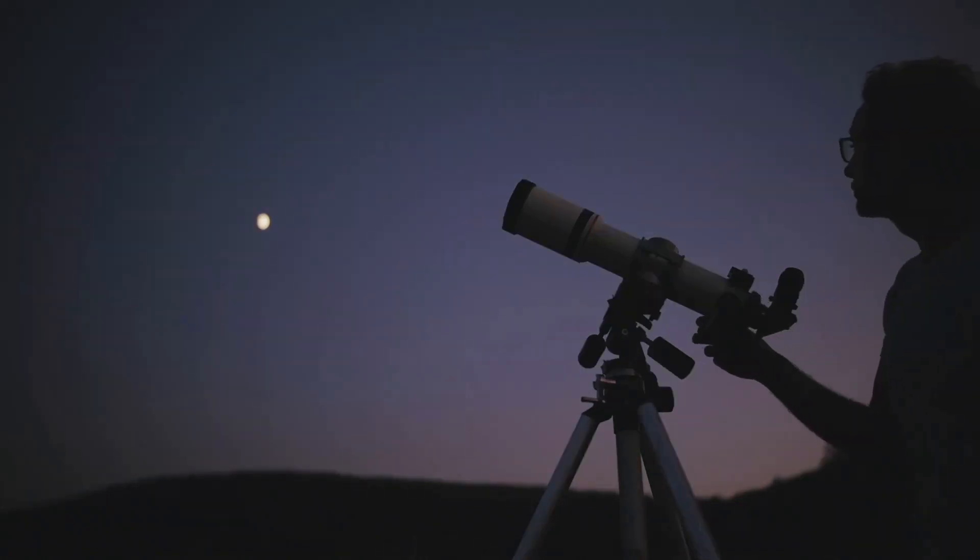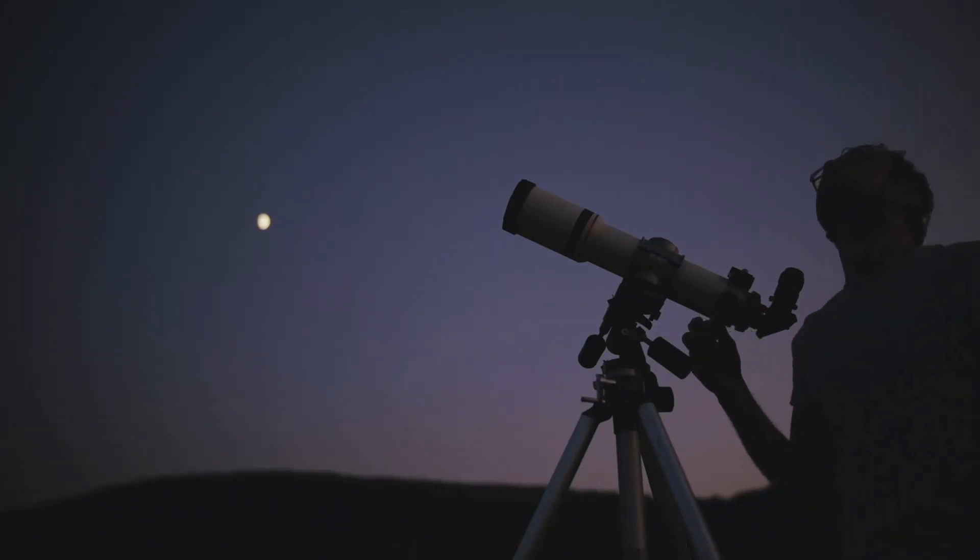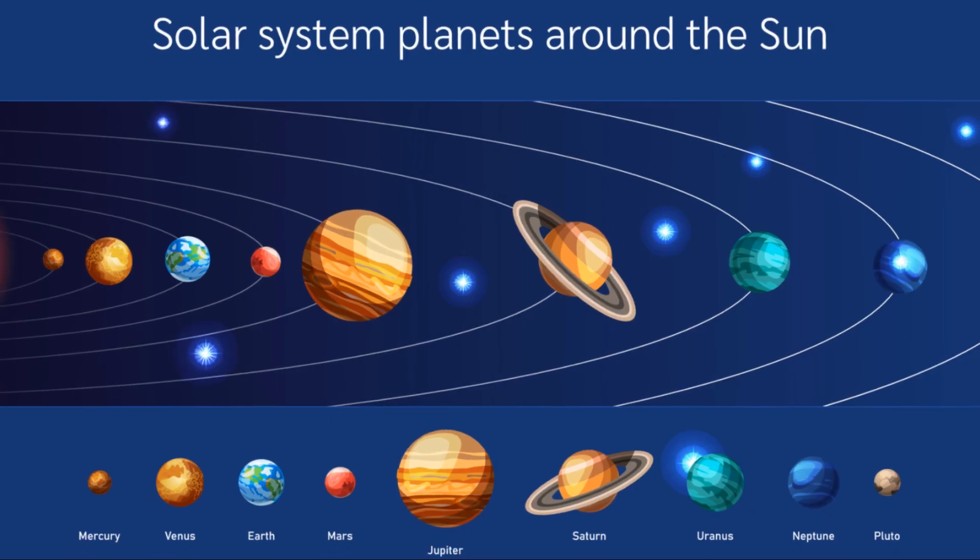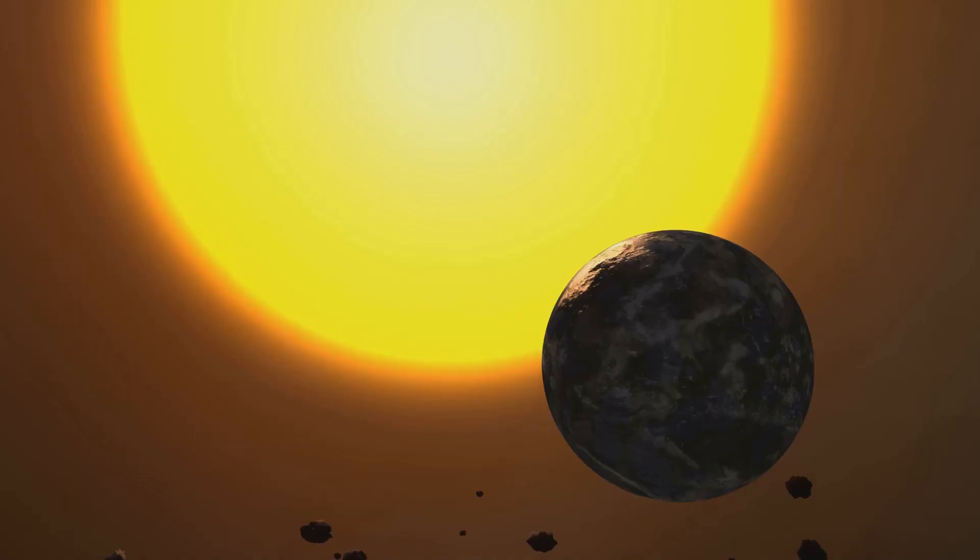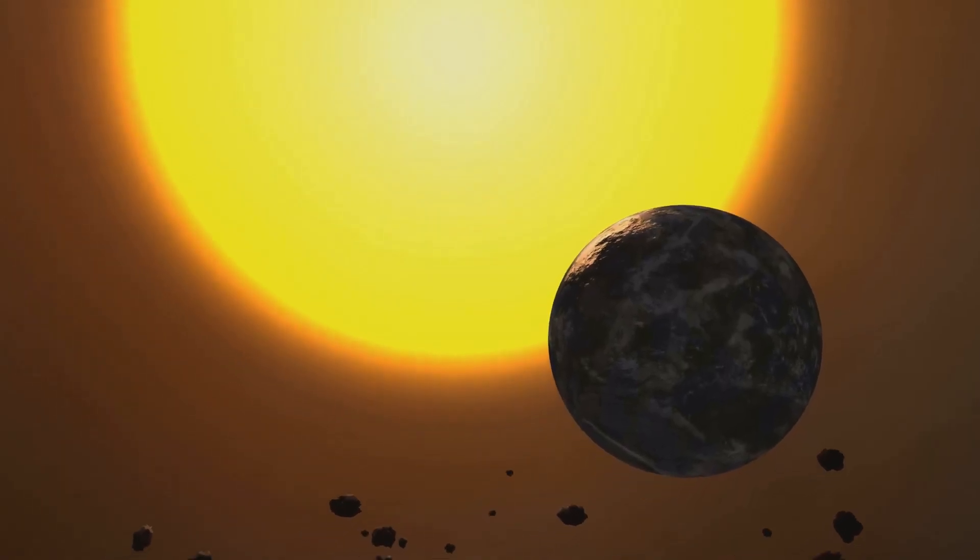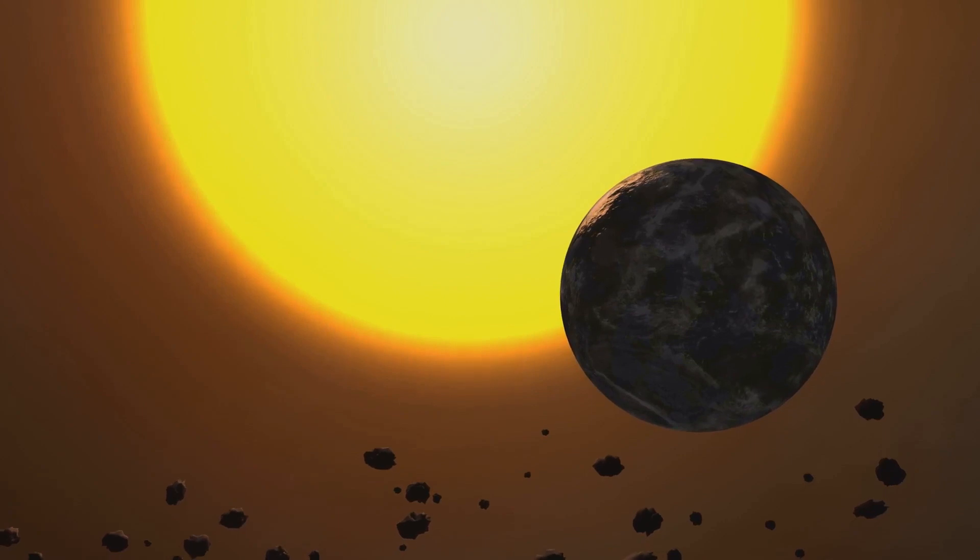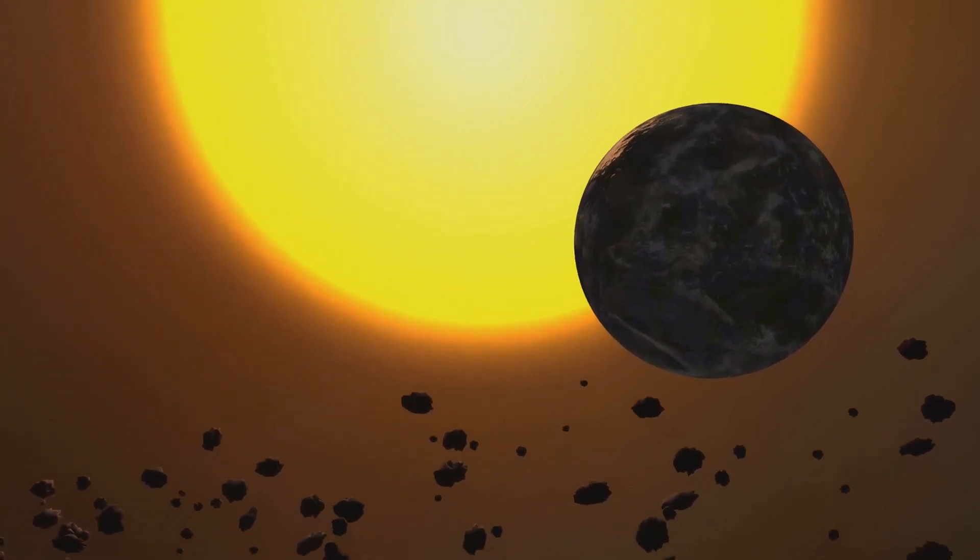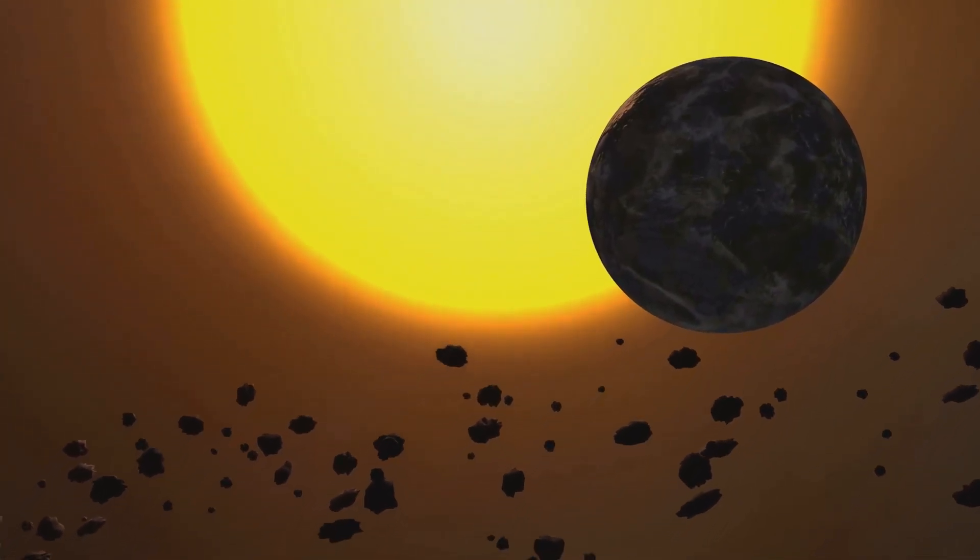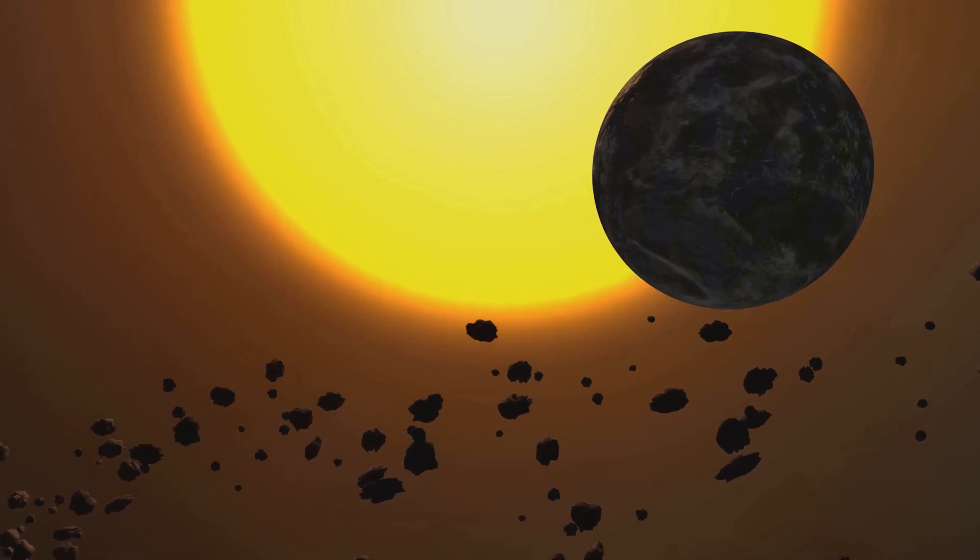In simpler terms, this means everything in the universe, from the smallest dust particle to the largest galaxy, pulls on everything else with a force that depends on their masses and the distance between them. This law brilliantly explained why the planets orbit the sun as they do, and why the moon orbits the earth. It was a revelation that interconnected the cosmos, painting a picture of a universe where every celestial body influences every other.